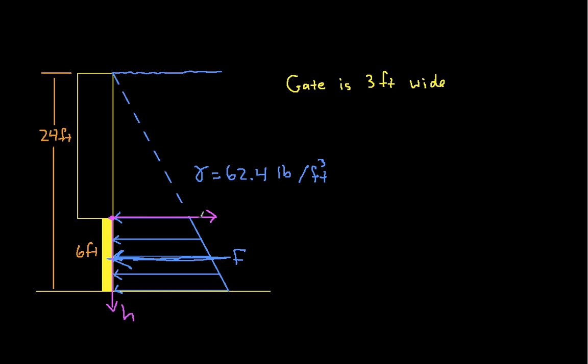And then this axis will be the magnitude of the force per, force in pounds per foot, the distributed force on the gate. And we'll call this W of H.